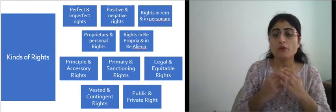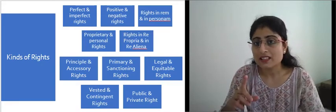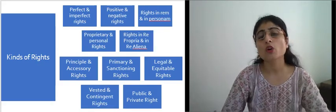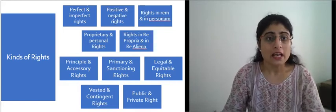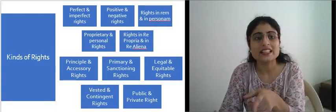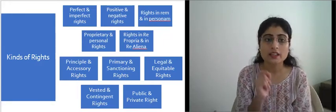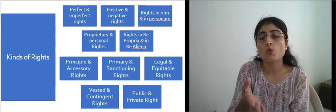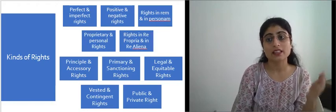Let's begin with perfect and imperfect rights. These kinds do not define rights in a constrained manner — defining rights remains difficult even with them. The perfect right corresponds with the perfect duty. Perfect rights are recognized and enforceable by law, and action can be taken against the wrongdoer by filing a suit in court when breached. A perfect right only exists when there is a corresponding perfect duty protected and executable by law.